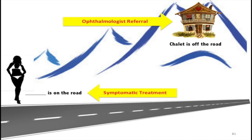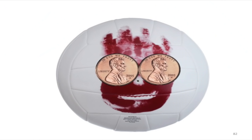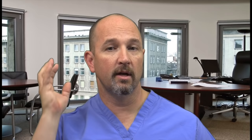Chalazion versus hordeolum: a chalazion is off the eyelid border, painless. A hordeolum is on the eyelid, painful. Wilson's disease is excess copper — linked to Kayser-Fleischer rings of the eye. For the Weber test — close your eyes and hum; you should hear the vibration equally in both ears. With conductive hearing loss, Weber localizes to that side — that's a poor man's Weber test.